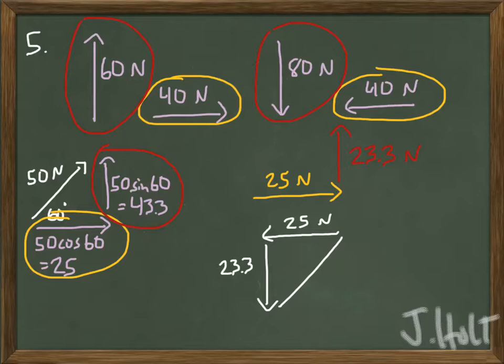So equilibrium means that everything cancels out. So if I have my total force to the right as 25 and my total force in the up direction as 23.3, that means a force that would cancel it out would be a force to the left at 25 and a force down at 23.3. That's what would cause equilibrium, the exact opposite.